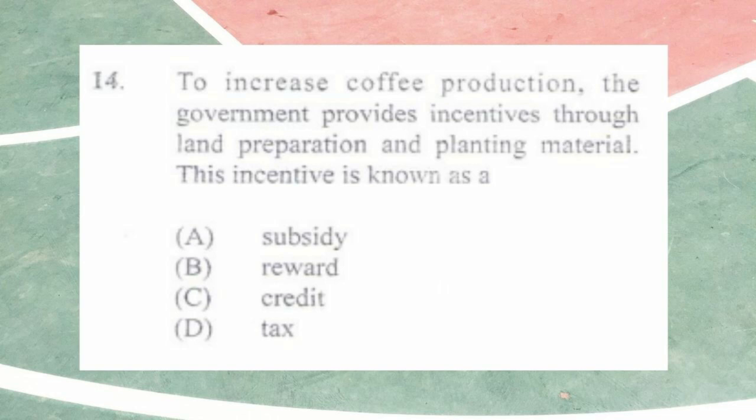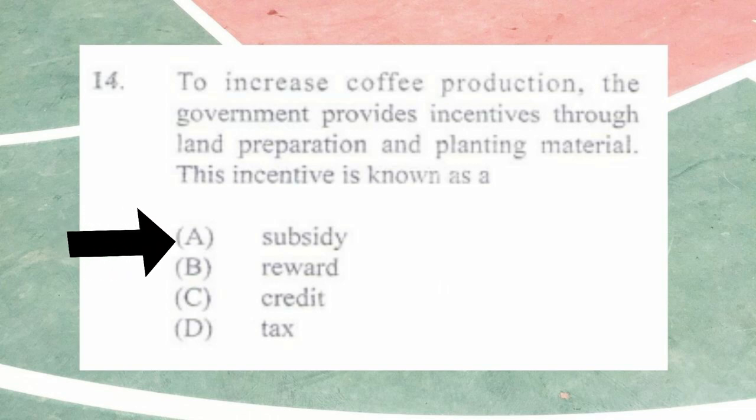Question number fourteen: to increase coffee production the government provides incentives through land preparation and planting material. This incentive is known as a) subsidy, b) reward, c) credit, d) tax. The answer is a) subsidy. The government normally provides three main types of incentives: subsidy, price support, and tax breaks.